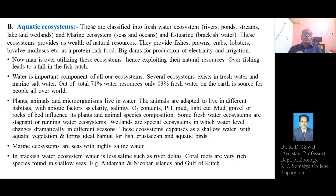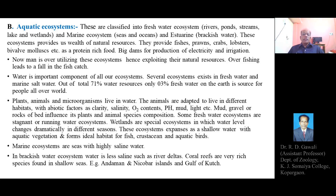There are different types of water bodies, each serving as a separate ecosystem, each having variable species of plants, animals, and microorganisms due to the different abiotic factors present. These abiotic factors include clarity, salinity, oxygen content, pH, mud, and light, which are variably present in different water resources. The gravel or rock of the bottom in a respective water resource influences its plant and animal species composition.